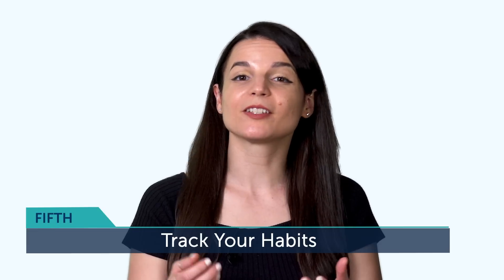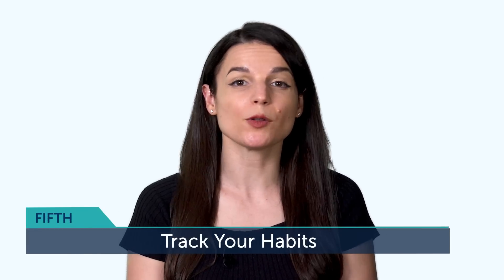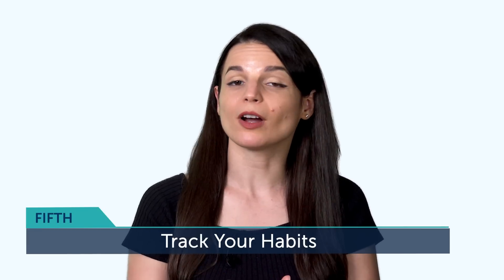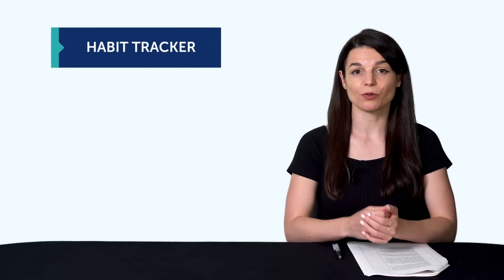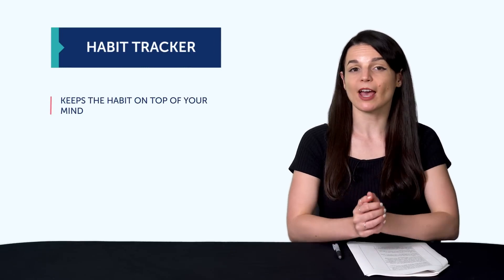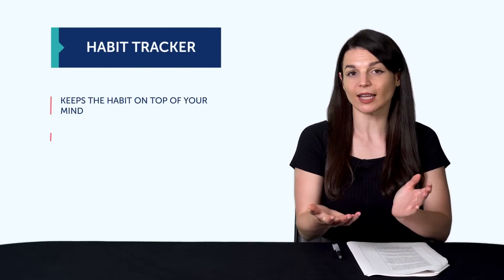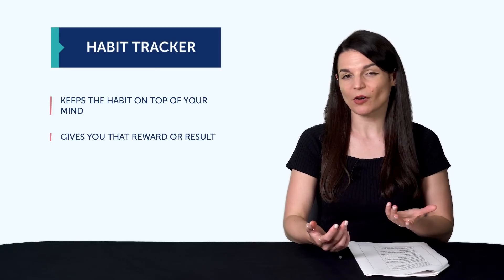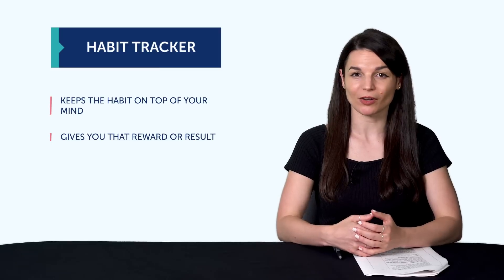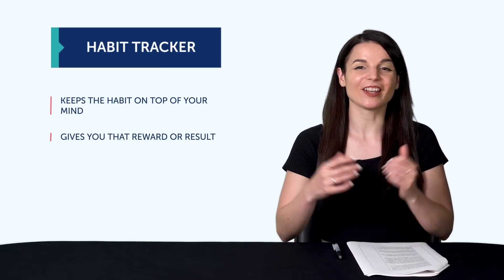The fifth tip is to track your habits. And it's something you can do with a calendar, where you cross the days on a calendar every time you learn your target language. Having that habit tracker does two things. First, it keeps the habit on top of your mind. And second, it gives you that reward or result. So if you're consistent, you have the visual proof right in front of you. If you're not, well, at least now you know your progress.